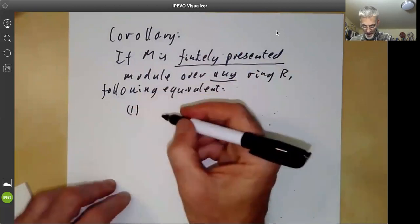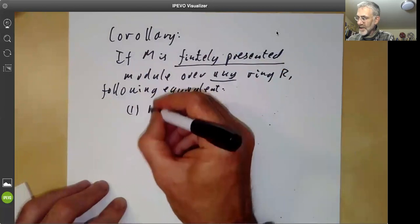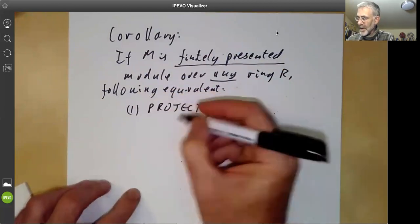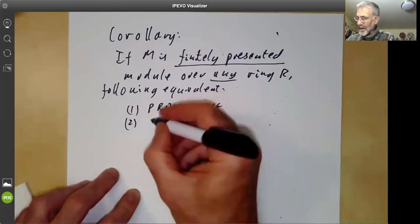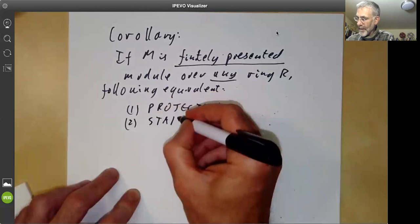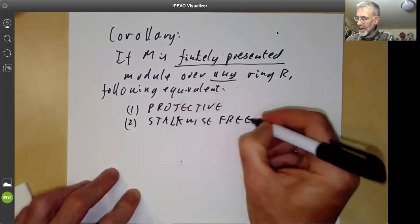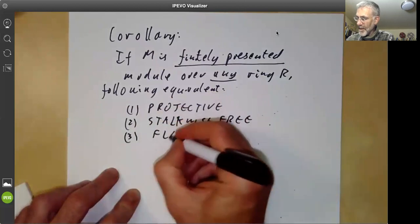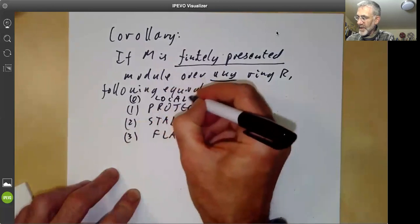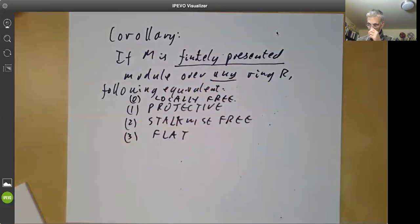First of all, M is projective. I guess we could also have it's stalkwise free. And it could be flat. And I guess I forgot the conditions, so let's just have locally free up there. So all these conditions are equivalent.